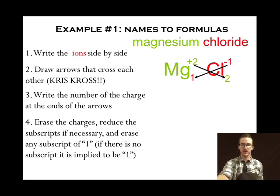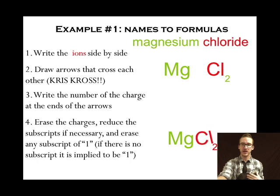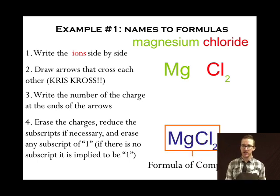reduce our subscripts if necessary, and erase any subscripts of one. It's important to recognize a subscript of one understood without writing it down. So our final formula here. MgCl2. What this tells me is I have one magnesium ion, two chloride ions to make an overall neutral formula unit of magnesium chloride.